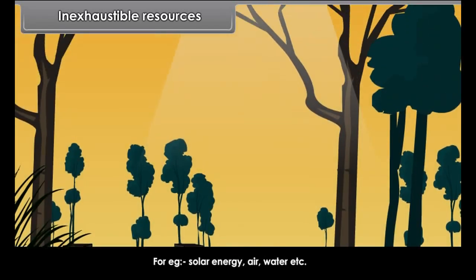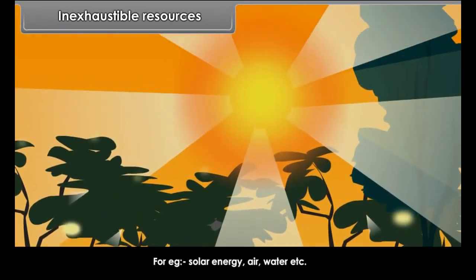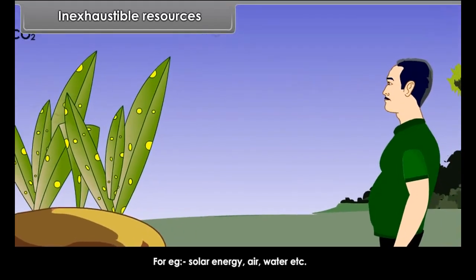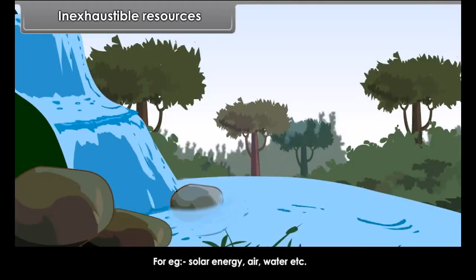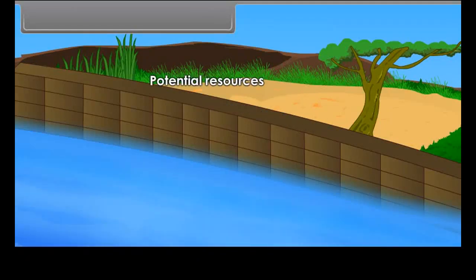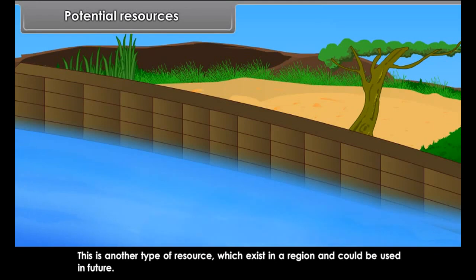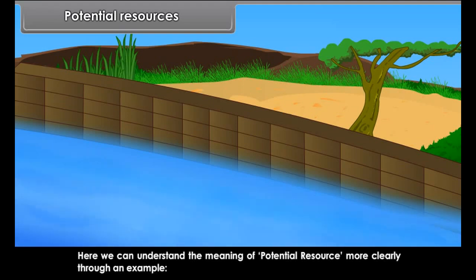Now let us understand the meaning of inexhaustible resources. Inexhaustible resources are the resources which never come to an end even if used continuously. They can be renewed by natural processes. For example, solar energy, air, water, etc.